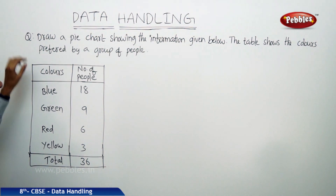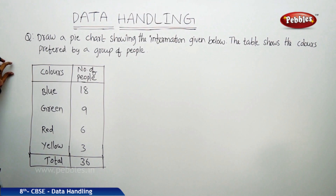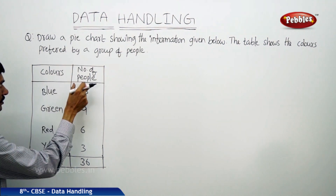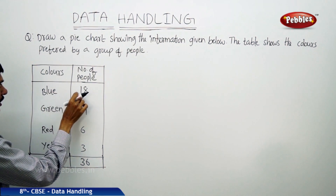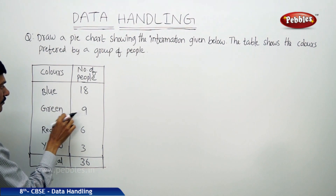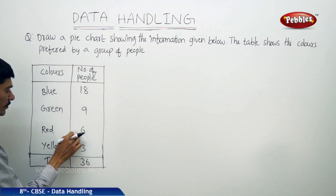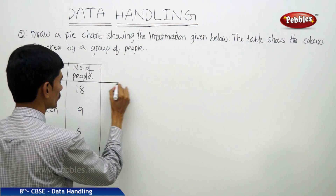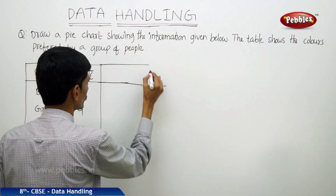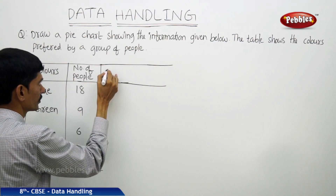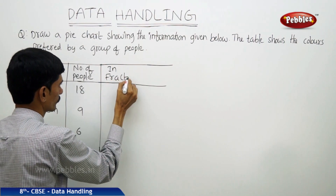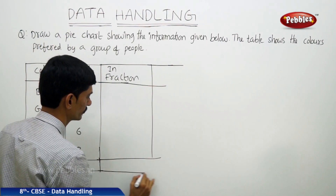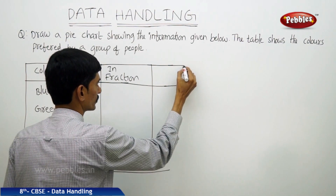Now let us solve a problem: draw a pie chart for the colors preferred by a group of people. In the table, 18 people prefer blue, 9 people prefer green, 6 people prefer red, and 3 people prefer yellow. The total number of people is 36. We extend the table with a fraction column and a central angle column in 360 degrees.